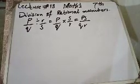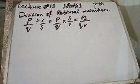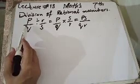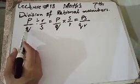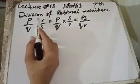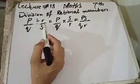Assalamu alaikum dear students of class 7th. Today our lecture is related to your mathematics book and the topic is lecture number 13: division of rational numbers. The formula I have written on the board - P over Q divided by R over S, where P over Q and R over S represent two rational numbers.